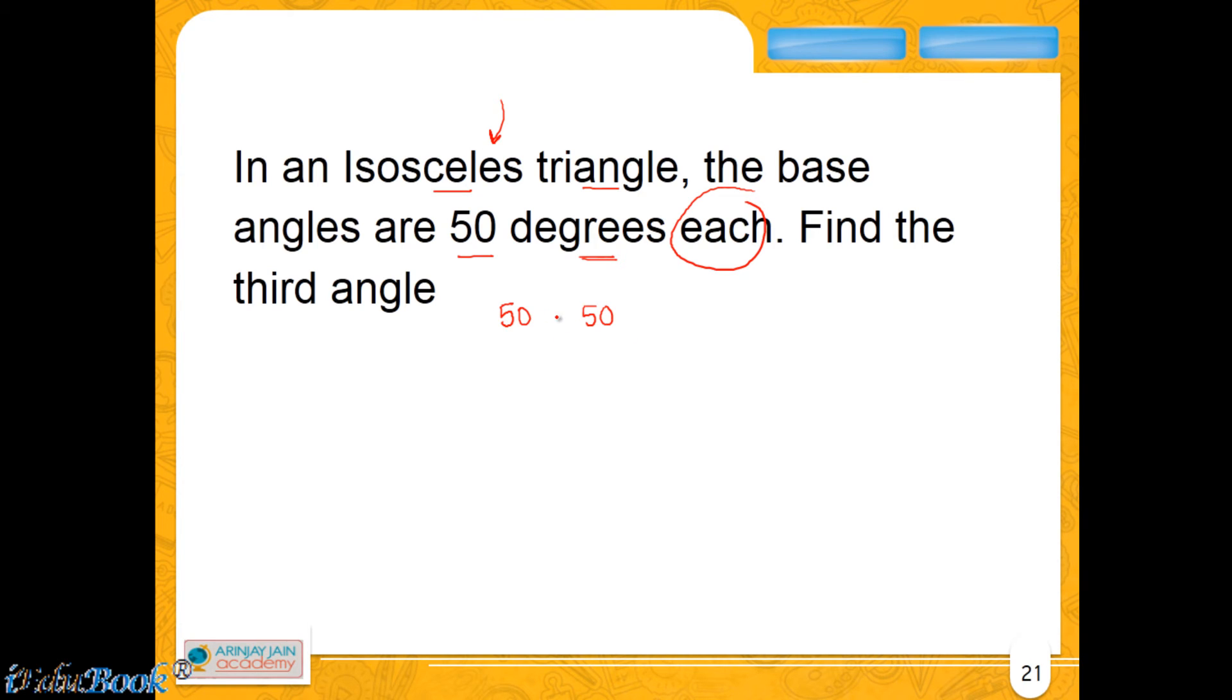Isn't that simple? 50 plus 50 plus the third angle, by virtue of the angle sum property, is equal to 180 degrees. So the third angle is nothing but 180 minus 50 minus 50, or in other words, 180 minus 100, or 80 degrees.